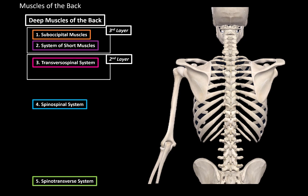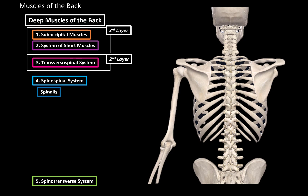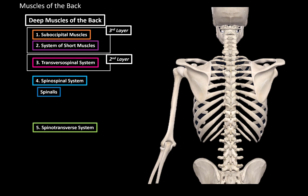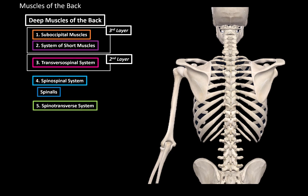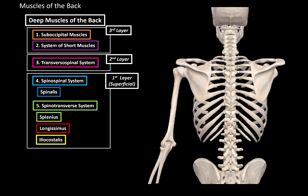Next we have the spinospinal system, which consists of spinalis, and the spinotransverse system, which consists of splenius, longissimus, and iliocostalis. All of these are considered the first layer of the deep muscles of the back, or the most superficial ones — these muscles are just below the superficial muscles of the back.